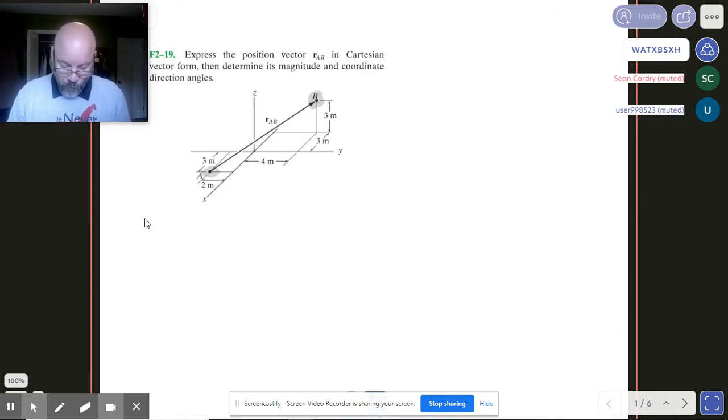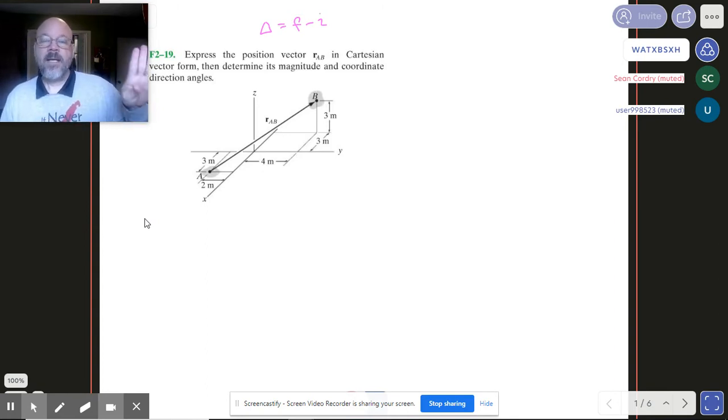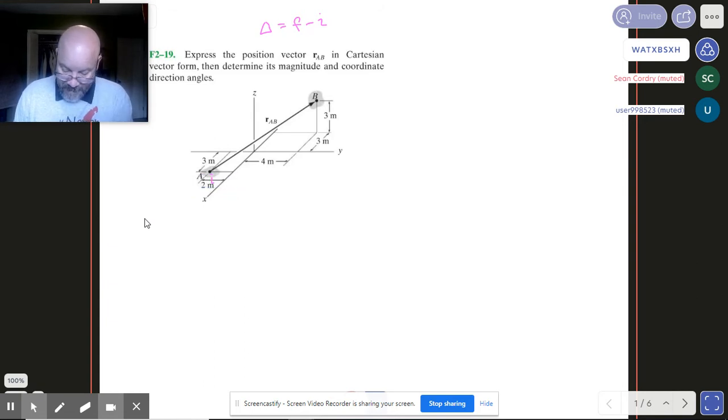What we want to do is think about the idea of change. Whenever we talk about change, you need to sort of burn it into your head that change is going to be, we use the delta symbol, and it's final minus initial. It's always that, always final minus initial. That's super important moving forward in all of your statics stuff. And then when we get into dynamics and in physics too, final minus initial. With our vector, we start at some initial point down here at A, and then we've got a final point up here at B.